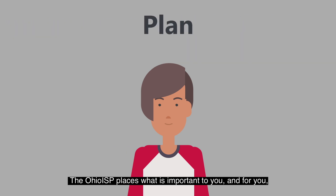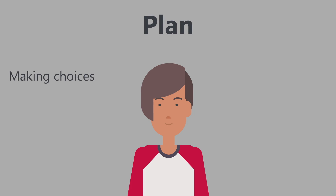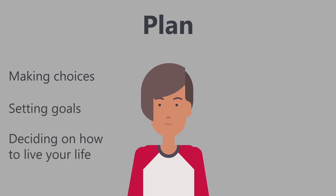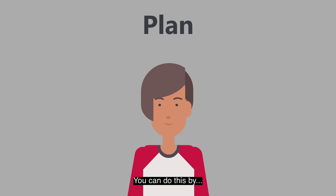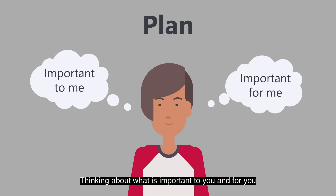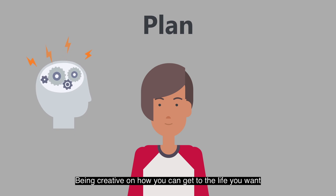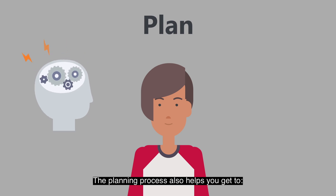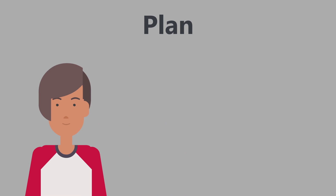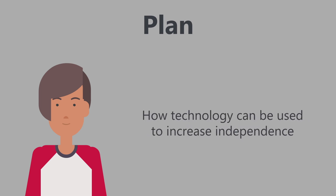The plan: The Ohio ISP places what is important to you and for you in the center of the planning. You will lead the planning process by making choices, setting goals, and deciding how you want to live your life. You can do this by talking to your team, thinking about what is important to you and for you, learning new things, and being creative on how you can get to the life you want. The planning process also helps get to how you need to be supported, services that can help, and how technology can be used to increase your independence.